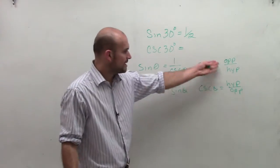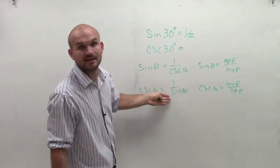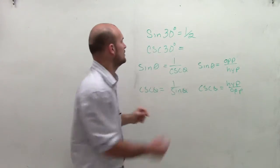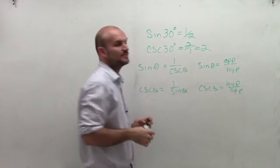So right now, you can see that these are reciprocals of each other as represented in this form. So therefore, if sine of 30 is 1 half, cosecant of 30 is going to be 2 over 1, which is just simply equal to 2.